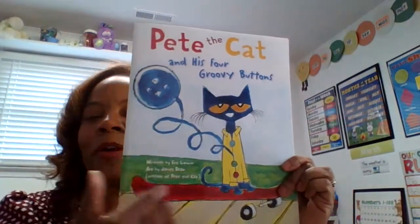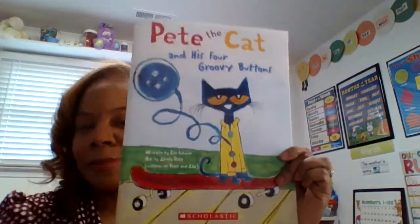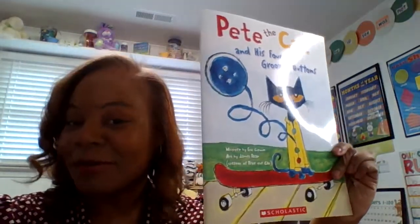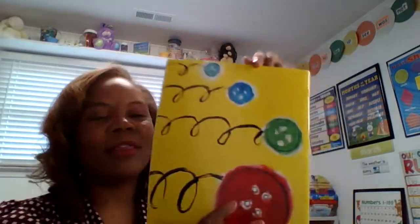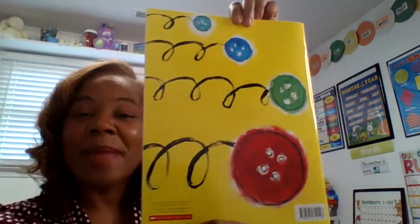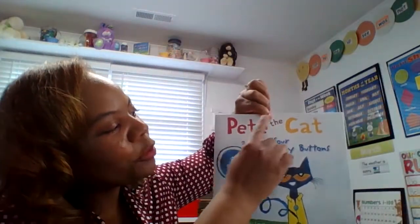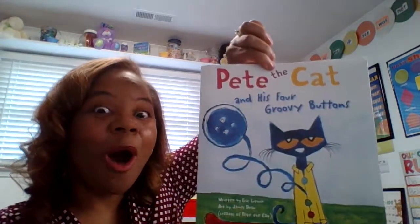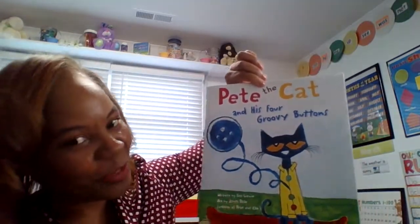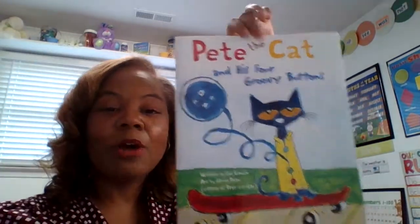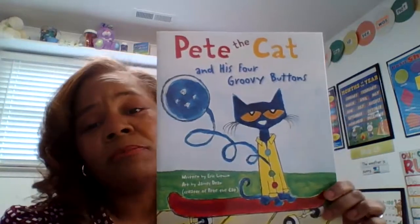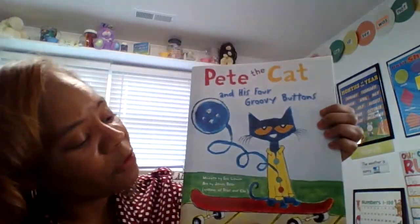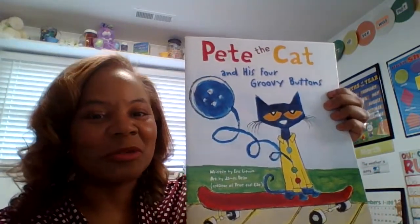What do we call this part of our book? The front cover — and we have the spine of the book and the back cover of the book. The person who writes the words or the text in the book, they are called the author. That's Eric Litwin. And the person who draws the beautiful pictures or takes the photographs, that's the illustrator.